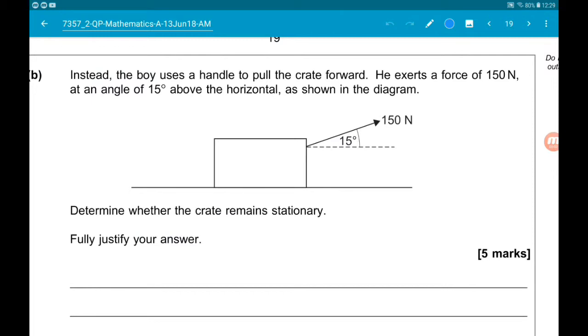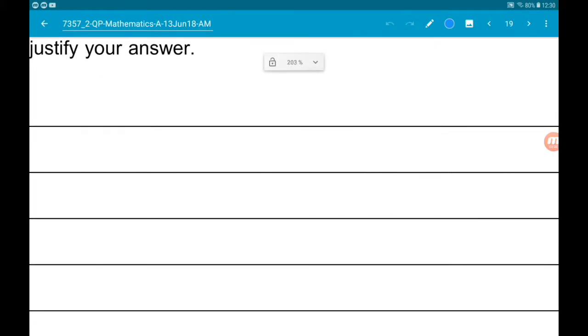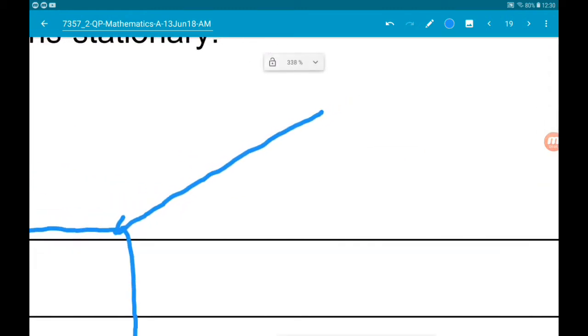Instead, the boy uses a handle to pull the crate forward. He exerts a force of 150 newtons at an angle of 15 degrees above the horizontal as shown in the diagram. We are asked to determine whether the crate will remain stationary. Okay, so again, let's do a little diagram. What we need to do is split this force through the handle of 150 newtons. We need to split it into its components.